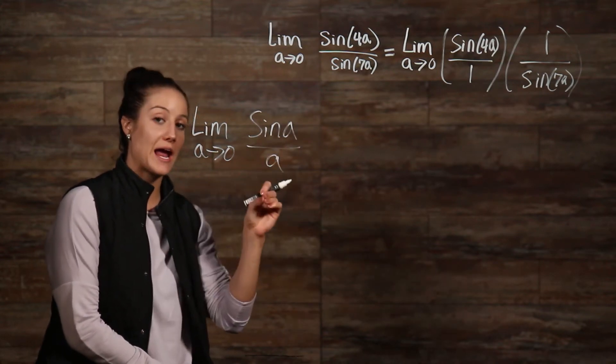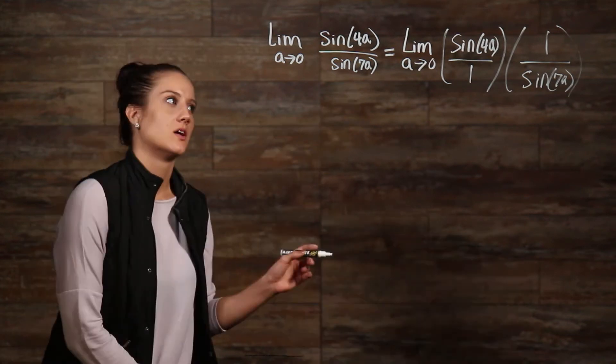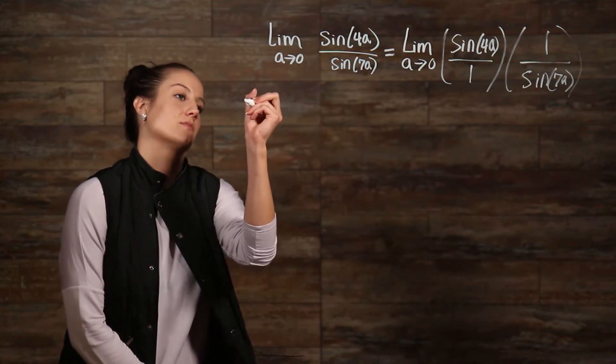And if we multiply by a over a, we'll get a on the top and we'll get a on the bottom here. So that's why we're doing that. So with that in mind, now we have...